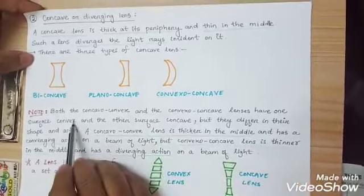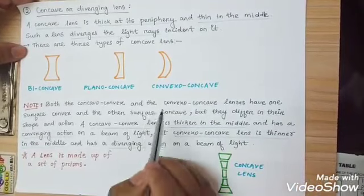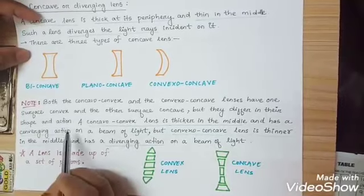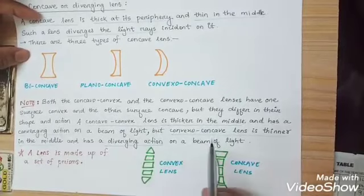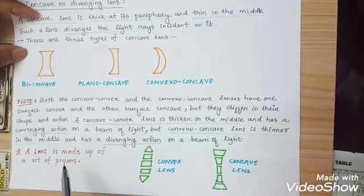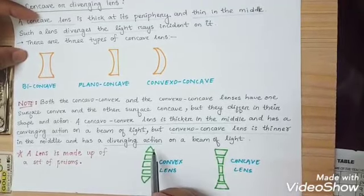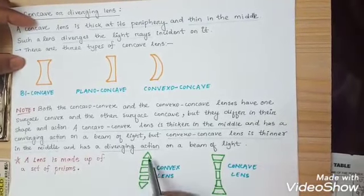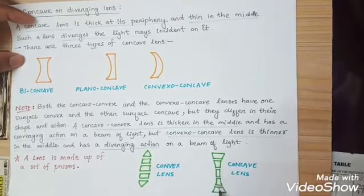One important thing: convexo-concave and concavo-convex both have the same two surfaces — one is convex and another is concave. The difference is that concavo-convex lens is thicker in the middle and has a converging action, whereas convexo-concave lens is thinner in the middle and has a diverging action. Also, a lens is made of a set of prisms — convex lens as well as concave lens.